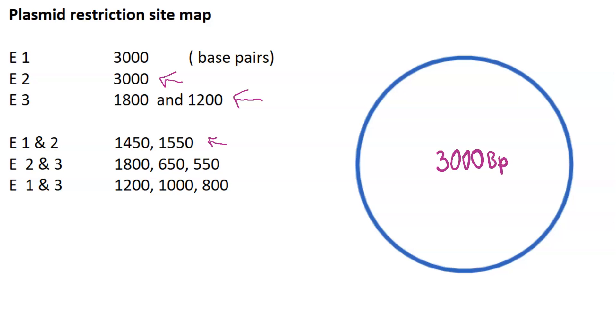So now the next thing that you want to do after that is figure out which enzyme individually gives you the highest number of fragments. So you don't want to look at the double digest yet. You want to look at individual enzymes and see which one will give you the highest number. So clearly you can see it is enzyme number three. So what we're going to do, we're going to start at 12 o'clock and move clockwise.